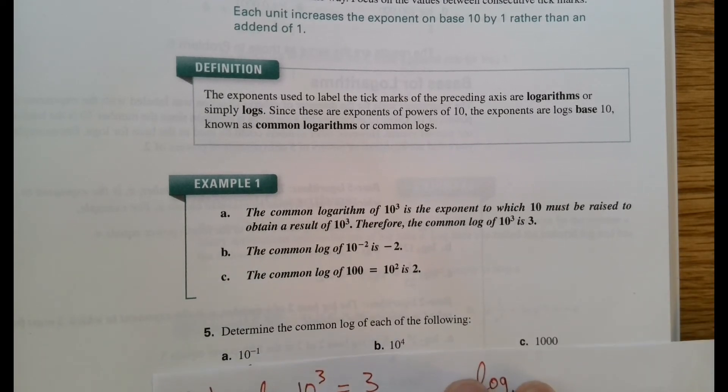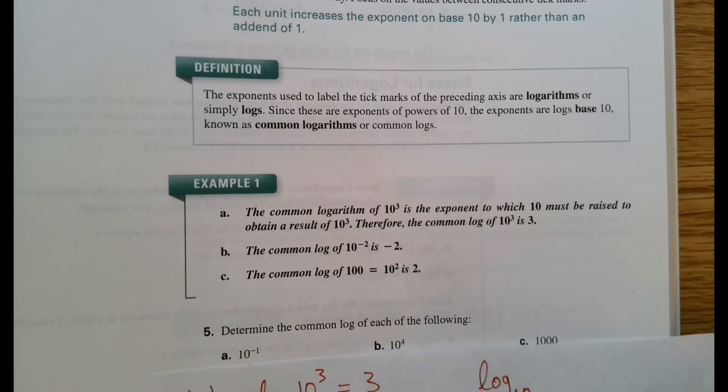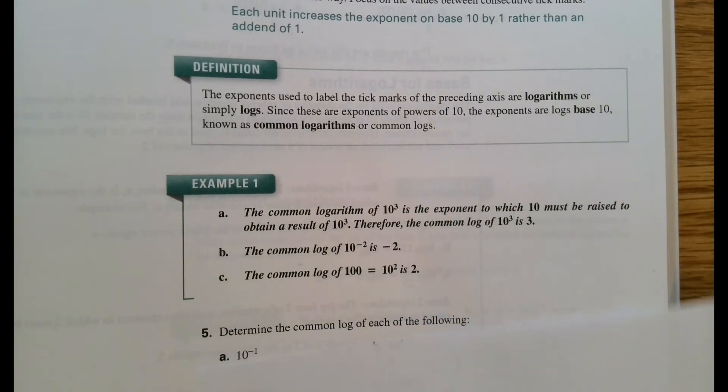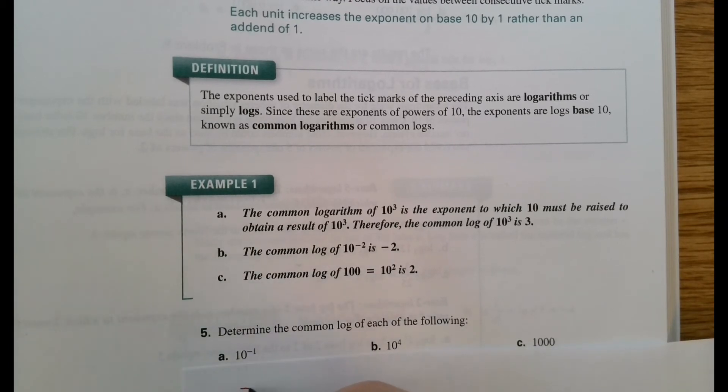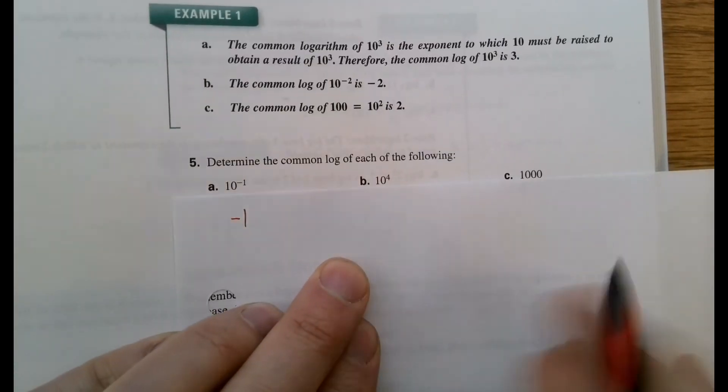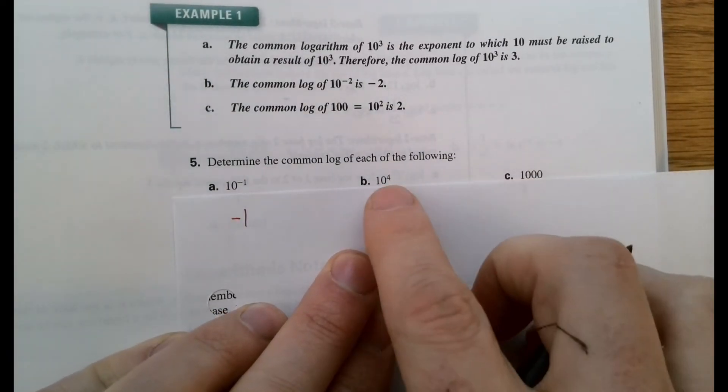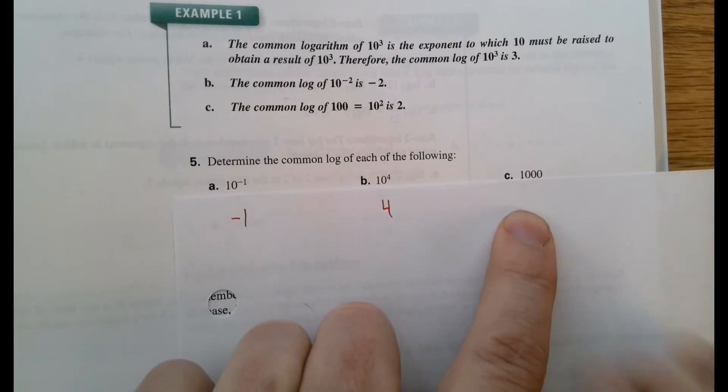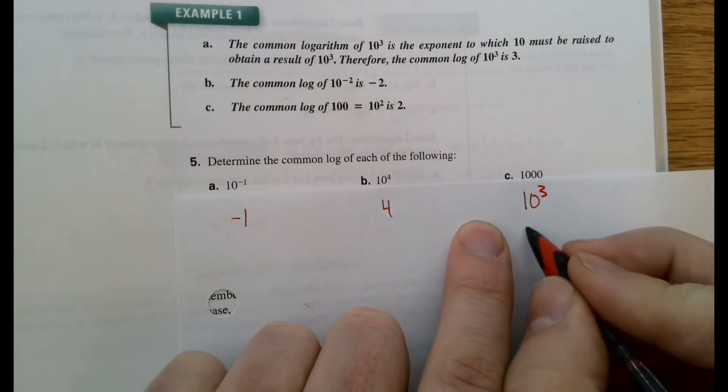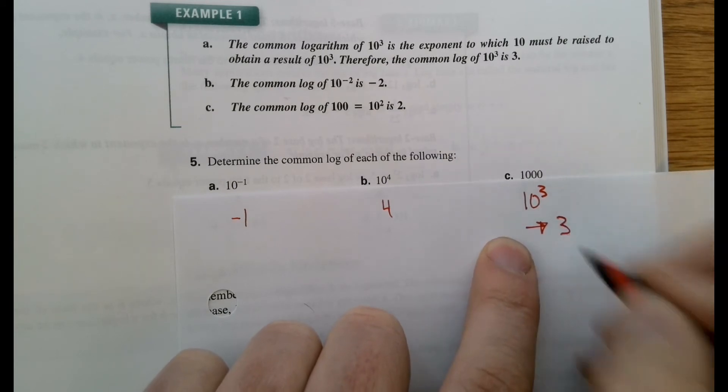So we're supposed to determine the common logs of each of these examples below. So 10 to the negative 1, when we evaluate common log of that, it's just the exponent. For b, when we evaluate the common log of that, again, it's just the exponent because that's base 10. When we get to 1,000, that base is not a 10, but we know how to write 1,000 as a base 10. That would be 10 to the 3. So the common log of 10 to the 3 would be 3.